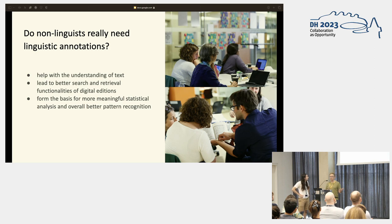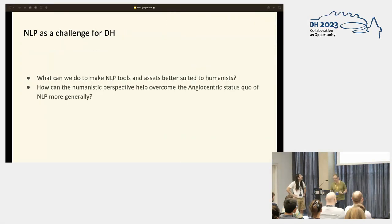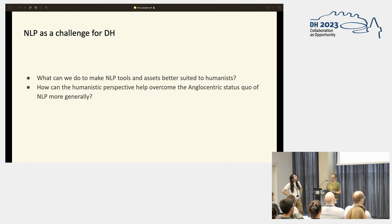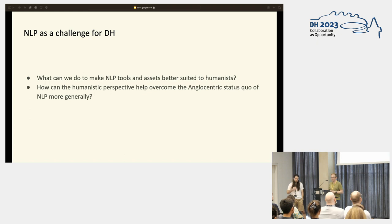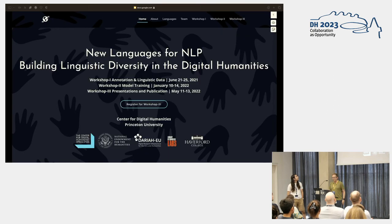Every time I see a word cloud based on an English text I commit the sin of envy, because not all of us work with morphologically simple languages like English. So the question facing digital humanities is twofold: what can we do to make NLP tools and assets better suited to humanists, and at the same time, how can the humanistic perspective help overcome the Anglo-centric status quo of NLP more generally?